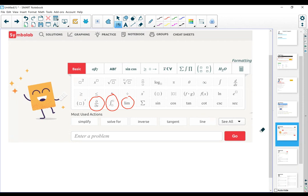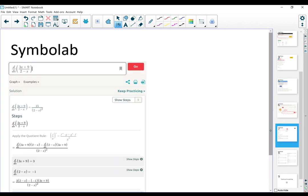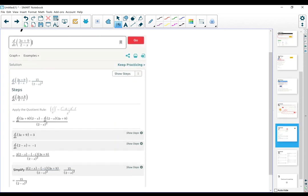Very similar to MathPapa, they have this little box where you input the question, you enter the problem, and then you click on Go. For example, let's say that you wanted to differentiate 3x plus 9 over 2 minus x. So after you click Go,